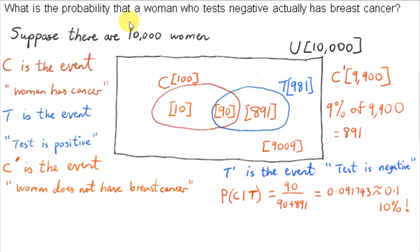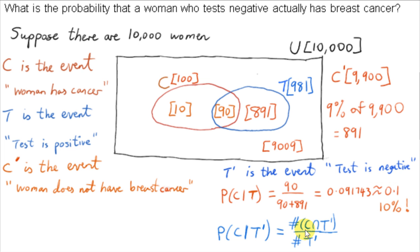For the next question, we want the probability that a woman who tests negative actually has breast cancer — P(C|T'), where T' is the event that the test is negative. We select from people who test negative, so we need the number of elements in T'. There are 981 elements in T, so 10,000 minus 981 gives 9,019 elements in T'.